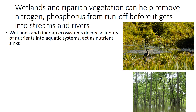One thing that can help filter out some of the nitrates before they reach rivers and end up being moved out to the ocean, creating dead zones, can be wetlands. Wetlands and riparian vegetation found along rivers can actually help to remove some nitrogen — and in some cases phosphorus — from runoff before it gets into streams and rivers.